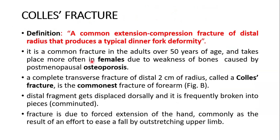It is a common fracture in adults over 50 years of age and takes place more often in females due to weakness of bones caused by post-menopausal osteoporosis. It's a complete transverse fracture of the distal 2 cm of the radius and is the commonest fracture of the forearm. The distal fragment gets displaced dorsally and is frequently comminuted.